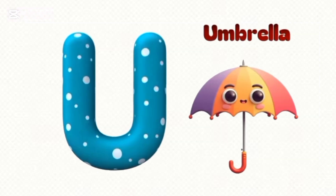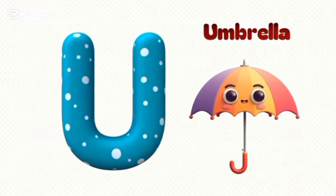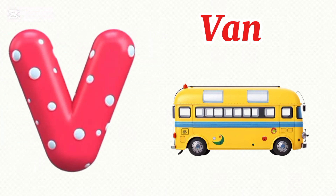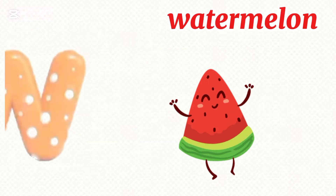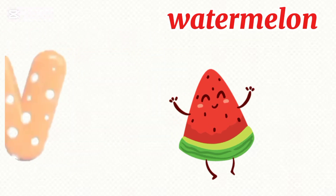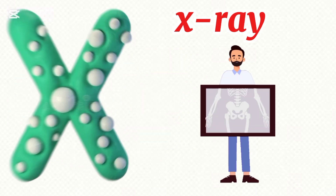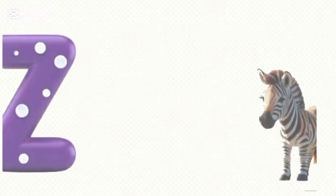U is for umbrella, u-u-umbrella. V is for van, van, van. W is for watermelon, wa-wa-watermelon. X is for x-ray, x-ray. Y is for yo-yo, yo-yo, yo-yo. Z is for zebra.